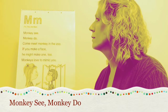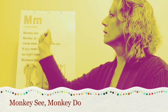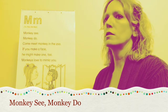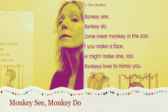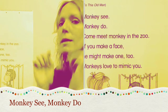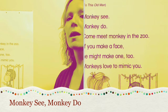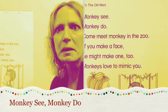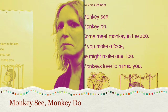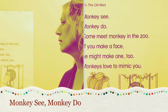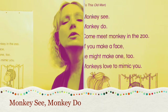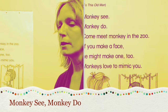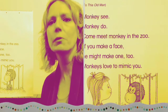Our next song is the M song — uppercase M and a lowercase M — and this is sung to the tune of The Old Gray Mare. Are you ready? Monkey see, monkey do. Come meet monkey in the zoo. If you make a face, he might make one too. Monkeys love to mimic you. Do you remember what mimic means? If you said to copy, you were right.